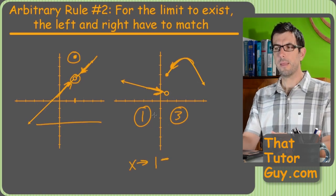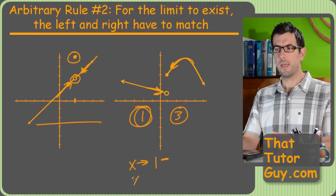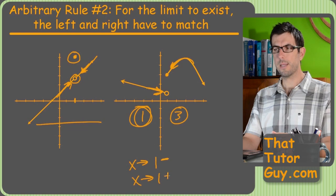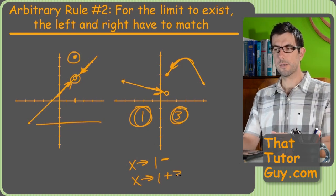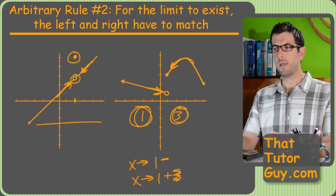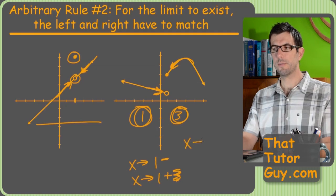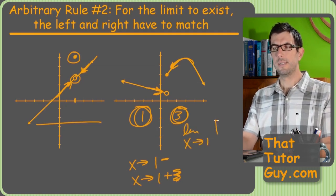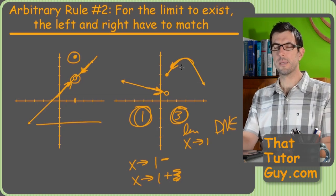So that's that key thing where if x was approaching one from the left, this would be the right answer. If x is approaching one from the right, three would be the answer.